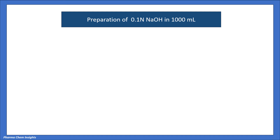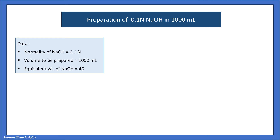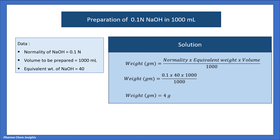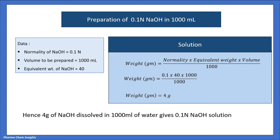Example 1: Preparation of 0.1 normal NaOH in 1000 ml. Data: normality = 0.1 N, volume = 1000 ml, equivalent weight = 40. Using the formula: weight (g) = normality × equivalent weight × volume / 1000 = 0.1 × 40 × 1000 / 1000 = 4 grams. Hence, 4 grams of NaOH dissolved in 1000 ml of water gives a 0.1 N NaOH solution.